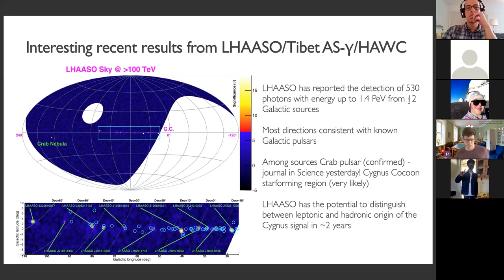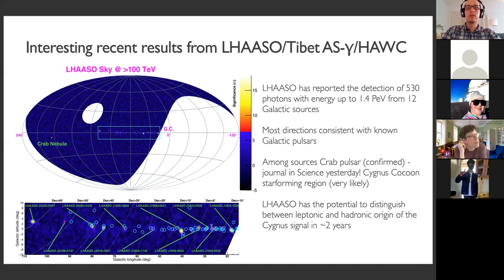This is exciting because we've never seen such high energy photons before. They are galactic, because if they were extragalactic they could not reach us — they get attenuated by interactions with the extragalactic background light. It's not clear what all 12 sources are, but in the paper there are possible counterparts listed. Most of them are consistent with the directions of non-thermal galactic pulsars; among them is the Crab pulsar, which is the only confirmed association.